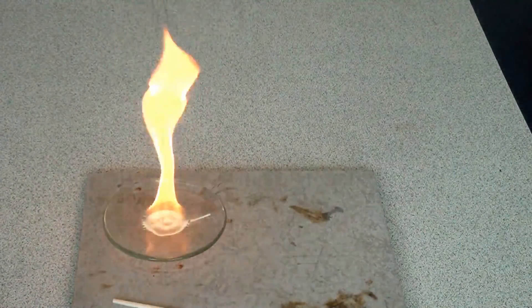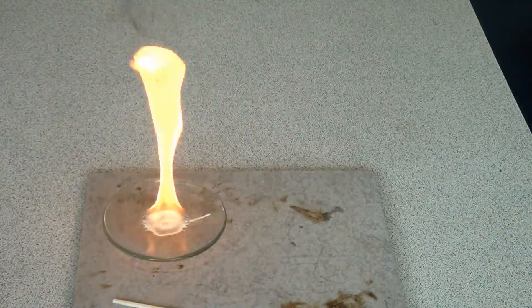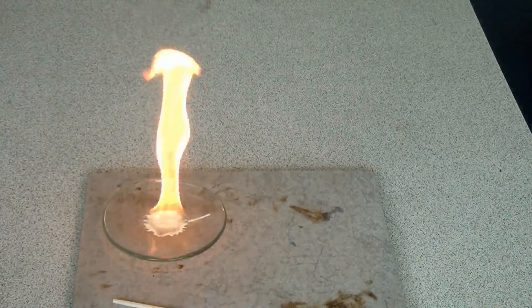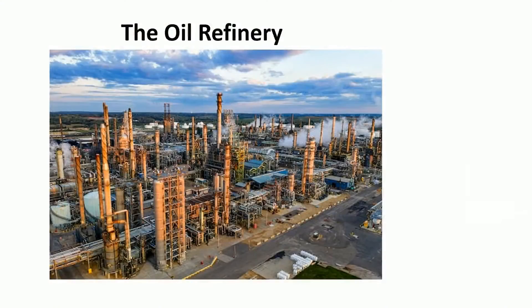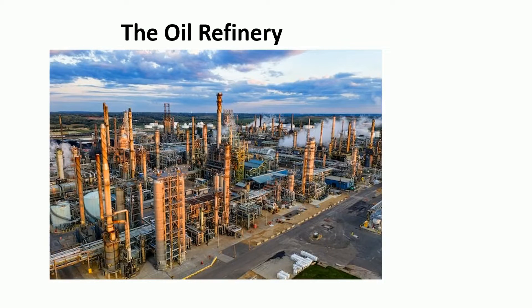We're now going to have a look at how fractional distillation happens on a large scale at the oil refinery. This is the oil refinery, where the crude oil arrives either by ship or by pipeline, and it's here where we're going to separate it into different fractions of similar-sized molecules to turn it into useful products.